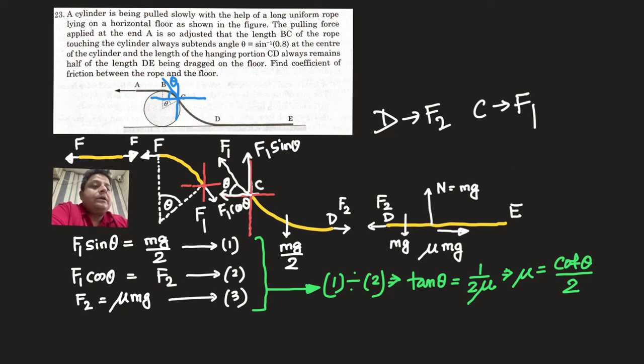Now let's look at the part DE. So in part D you have the weight is equal to mg, so normal reaction also mg. As it is sliding over ground, so the friction is μmg and the force here is F₂. So F₂ is equal to μmg.